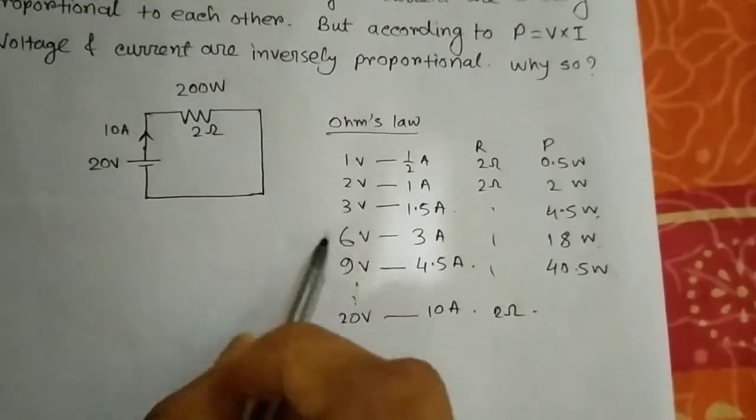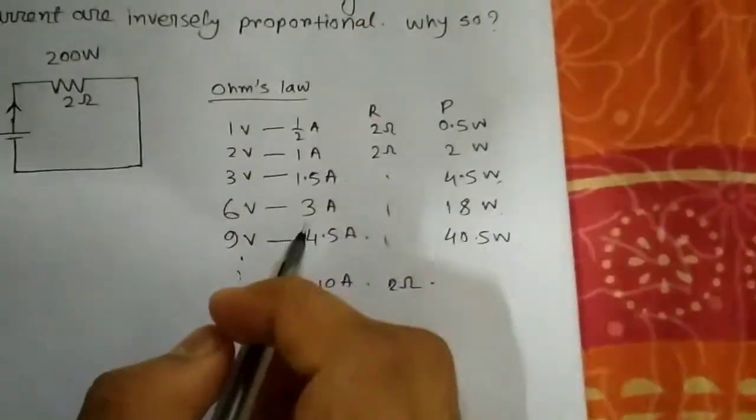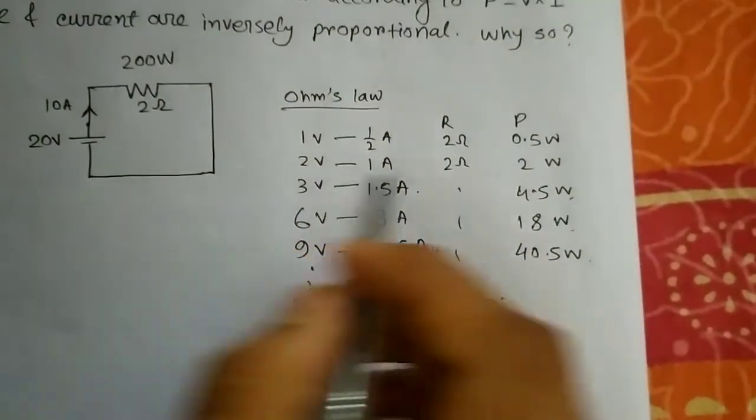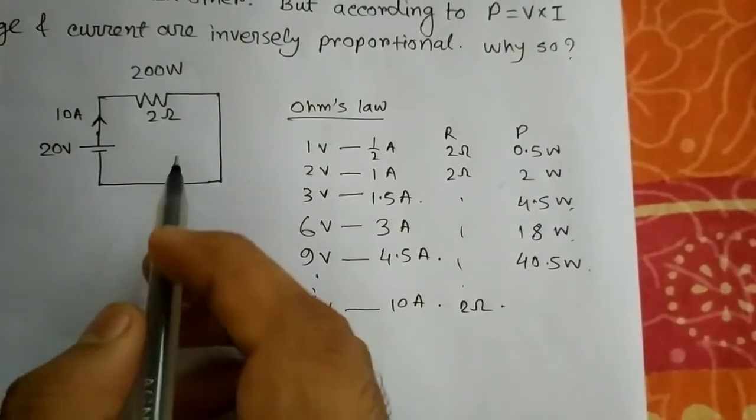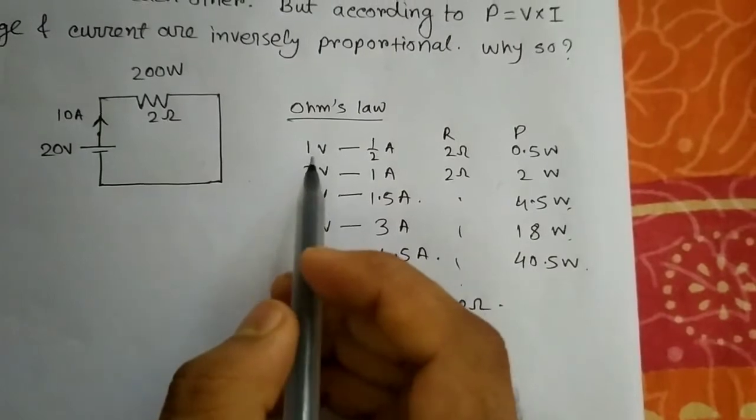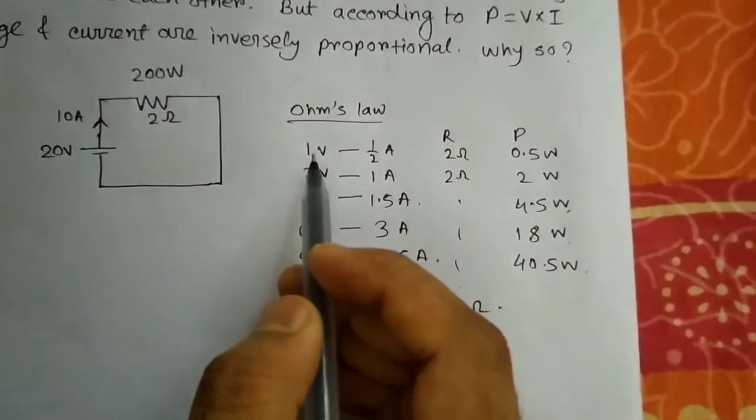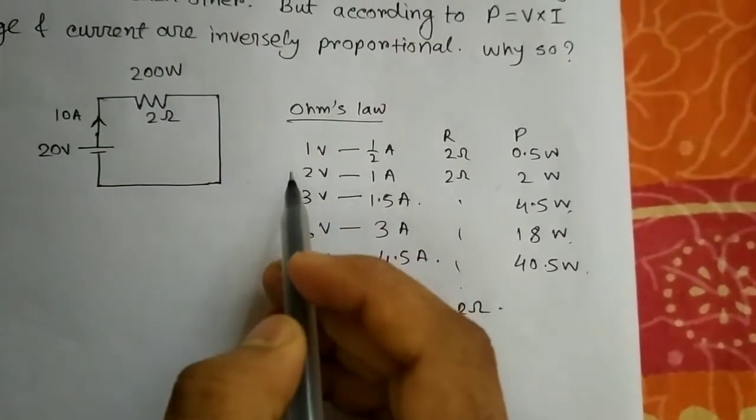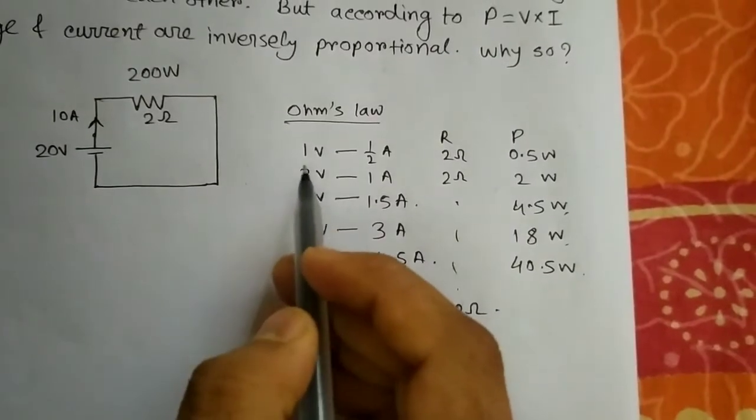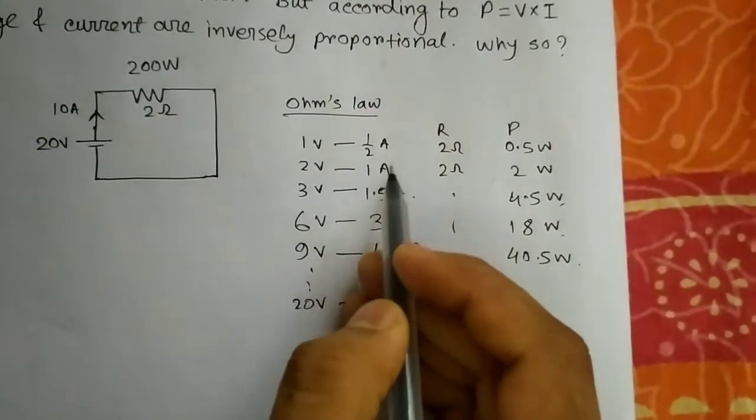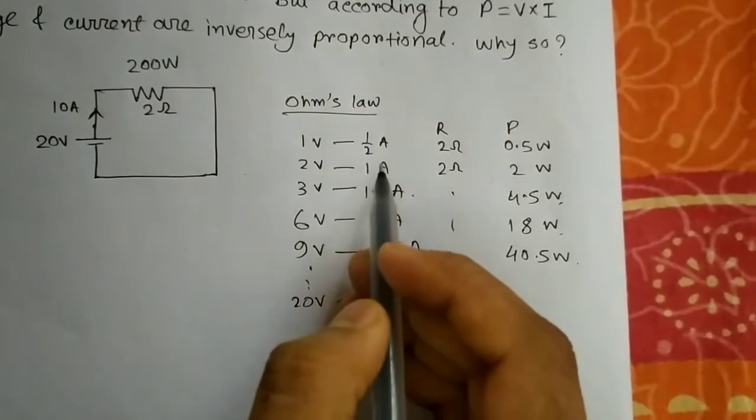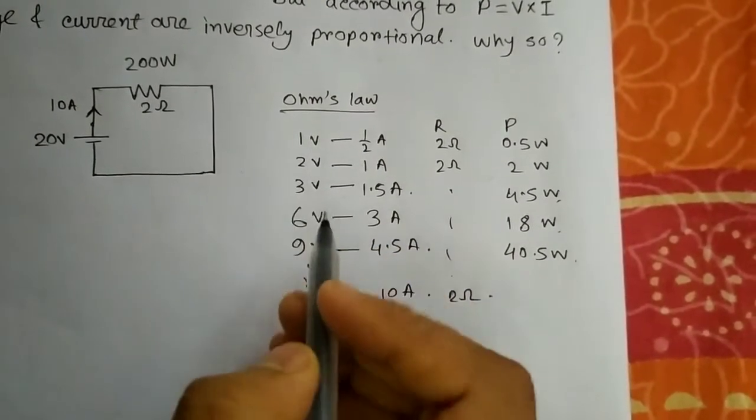See here, when Ohm's Law was created, the experiment was something like this. We were taking a particular resistance and increasing the voltage one by one. When voltage is 1, we increased the voltage by twice into 2. You can see the current is also twice, into 2.